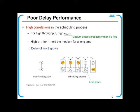However, the CSM algorithm suffers from poor delay performance due to high correlations in the scheduling process. In this example, at first link 2 is off. To turn on link 2, link 1 should be turned off first. However, for high throughput, medium access probabilities are typically set to be high, causing link 1 to hold the medium for a long time. Meanwhile, the delay of link 2 grows.